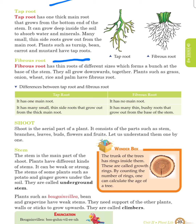Now we will learn the difference between taproot and fibrous root. Taproot has one main root, while fibrous root has no main root. Taproot has many small thin side roots that grow out from the thick main root. Fibrous root has many thin, bushy roots that grow out from the base of the stem.